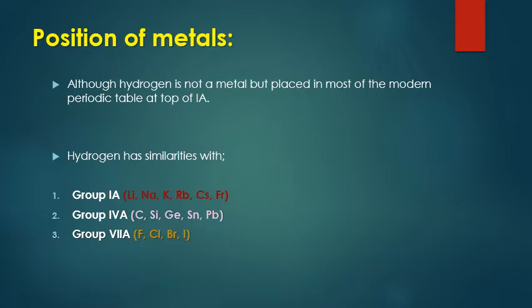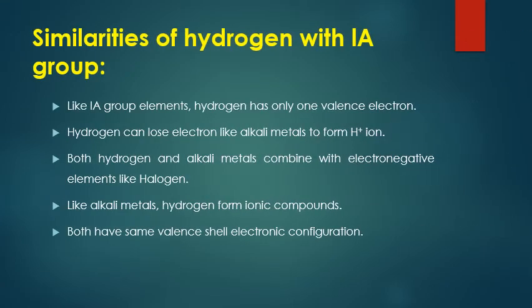First, let's look at where hydrogen sits in the modern periodic table — the Moseley periodic table — at the top of Group 1A. Group 1A contains the alkali metals. Hydrogen has similar properties to three groups: alkali metals, Group 4A which is the carbon family (carbon, silicon, germanium), and Group 7A — the halogens (fluorine, chlorine, bromine, iodine, astatine).